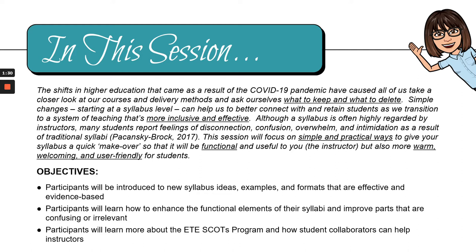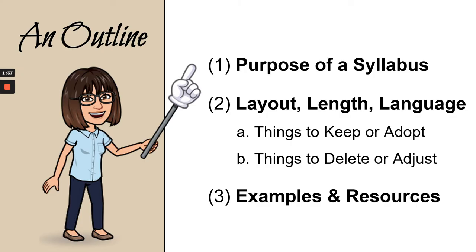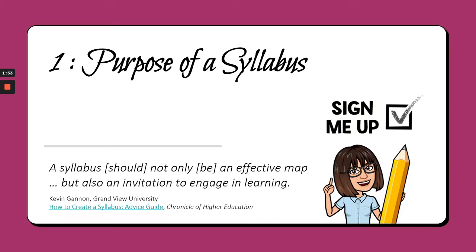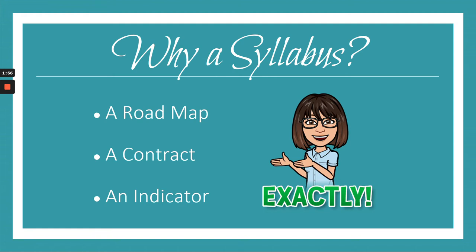In this session, I just want to share some new ideas, examples, and formats that will make your syllabus more functional for you, but also more warm, welcoming, and user-friendly for your students. Let's start with the purpose of a syllabus. We're going to talk about layout, length, and language, and we'll address things to keep or adopt, and then things to delete or adjust in all three of those areas. We'll also end with some examples and resources. Most sources agree that a syllabus generally functions in at least three ways: it's a road map and shows where you're going over the course of the semester, it's also a contract, and it's an indicator to students of what type of experience they can expect in your course. It also often becomes a first impression for what type of instructor you're going to be, so it's worth investing some time in.